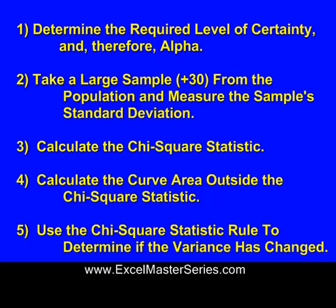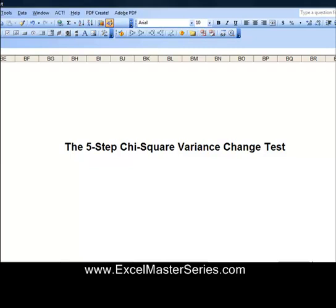Running through the five steps: Step 1, the required level of certainty is 95% and alpha is 0.05. Step 2, we took a large sample of 50 from the population and measured the sample standard deviation to be 1.9. Step 3, we're going to calculate the Chi-Square Statistic. Step 4, we're going to calculate the curve area. Step 5, we're going to apply the Chi-Square Statistic Rule.